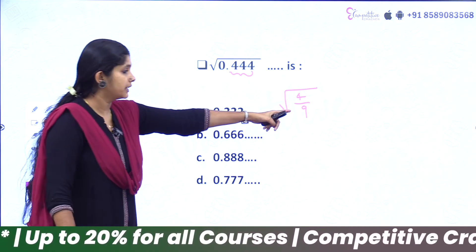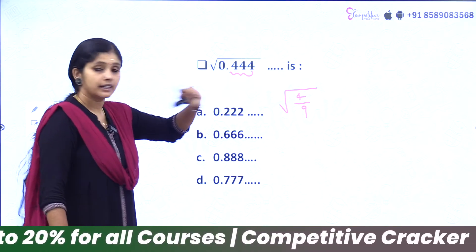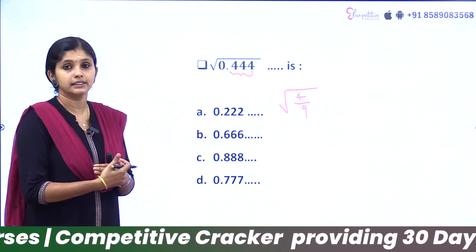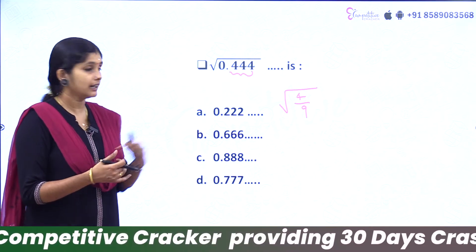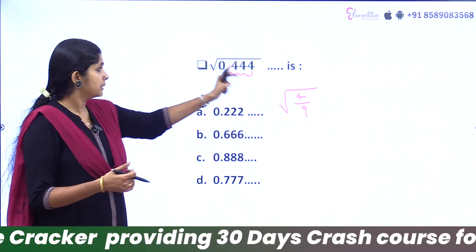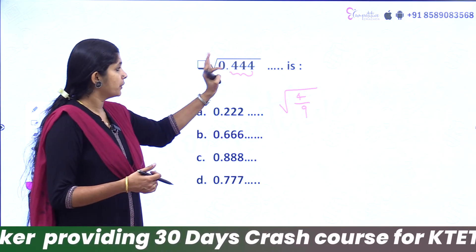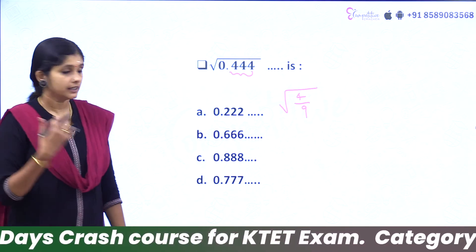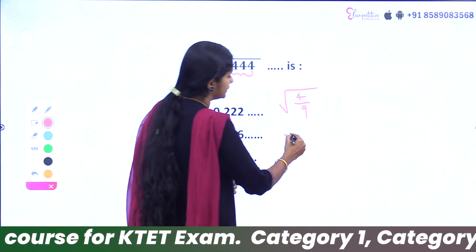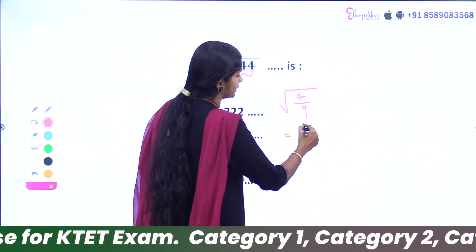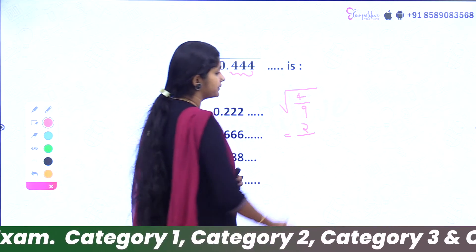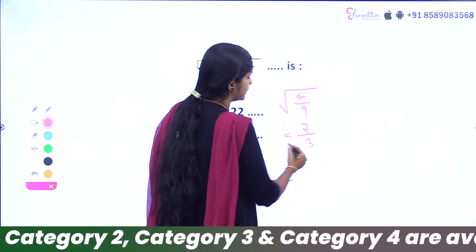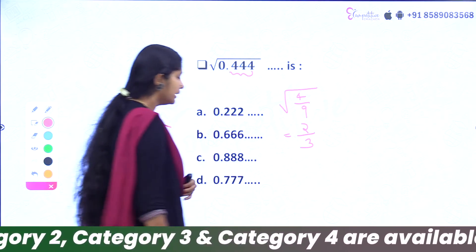Here, 1 repeated digit means denominator 9. So 0.444... equals 4 by 9. We have 0.444, so here we are 4 by 9. The second step is to take the root of this. 4 is a perfect square and 9 is a perfect square. So the answer is 2 by 3.